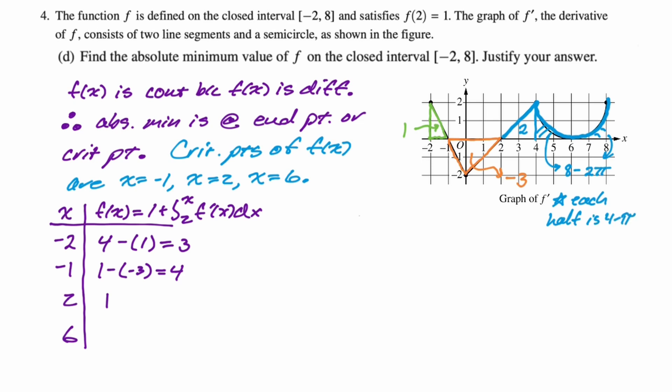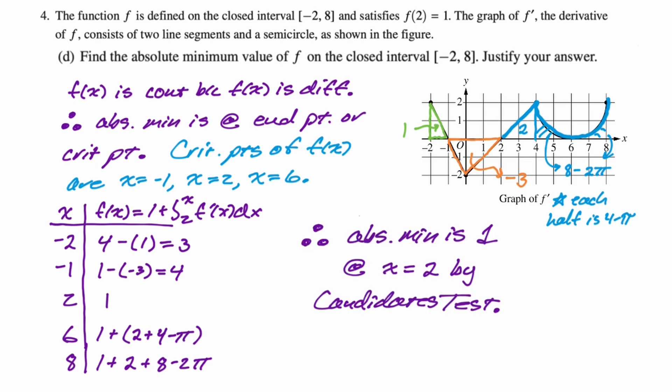So at six, we start at one, and we're just going to add the two. And then also we will add four minus pi. That's definitely bigger than one, which is all that really matters. We also need to figure out what's happening at eight. So it's going to be the one plus the two plus the entirety of eight minus two pi, which again is definitely bigger than one, which means the absolute minimum is one, and that occurs at x equals two by the candidates test. So that's the whole problem. I hope this was helpful, and good luck.